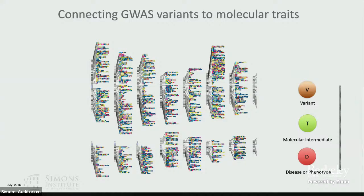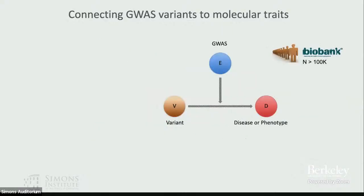The real motivator is represented by this slide — a picture from the GWAS catalog. Every dot here is a disease or phenotypic trait mapped to heritable variants in our genome. We have mappings between variants and disease traits ranging from eye color to disease risk, and we want to figure out the molecular intermediates that sit causally between variant and phenotype.